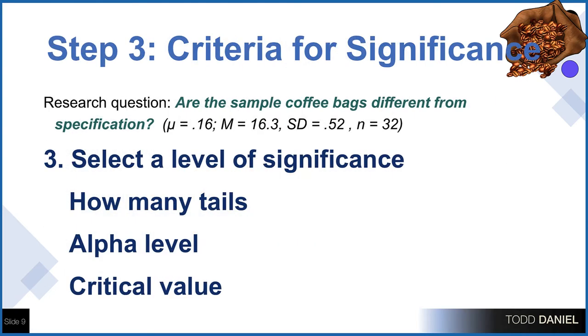Now we're ready for step three, where we will establish a criteria for significance. We are using a two-tailed test with an alpha level of 0.05, and we will establish our critical value using student's t distribution table. Remember that student refers to William Seeley Gossett, the statistician and master brewer at Guinness Brewing Company, who originally created these tables.